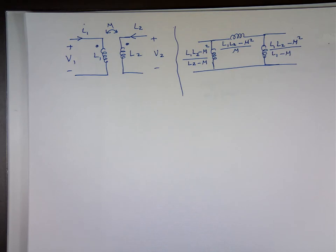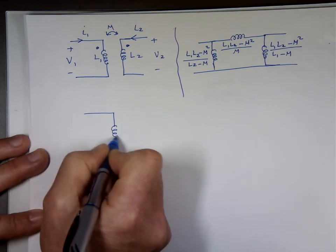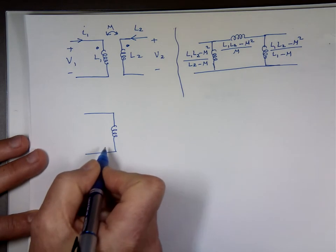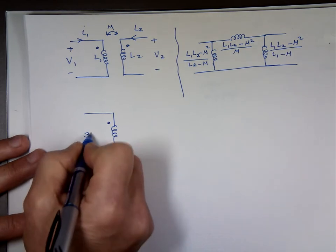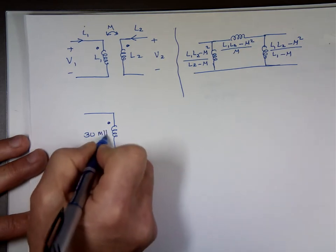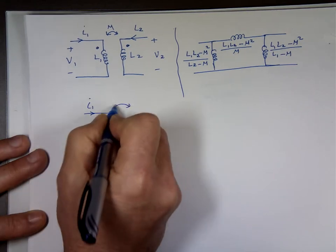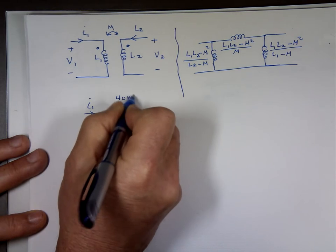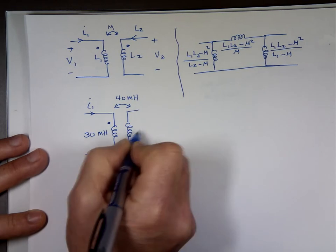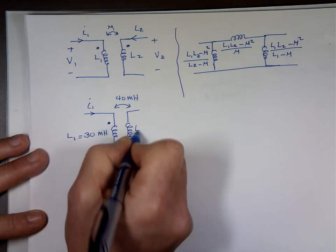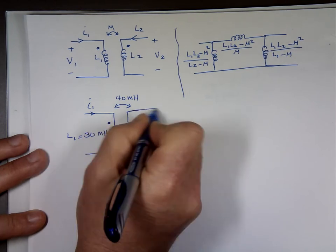So let's take an example. Let's take this one here again, the same example we just finished doing in the previous video. 30 millihenry. We have a current going in, Ic1. We have a mutual inductance, if I remember, that's 40 millihenry. This is L1 here. This is L2 here, which is 60 millihenry. And Ic2 was going in.